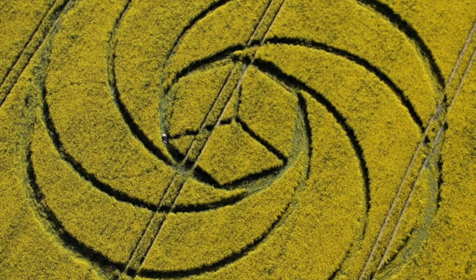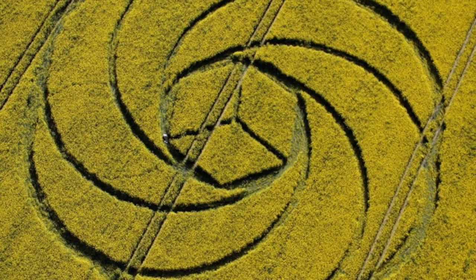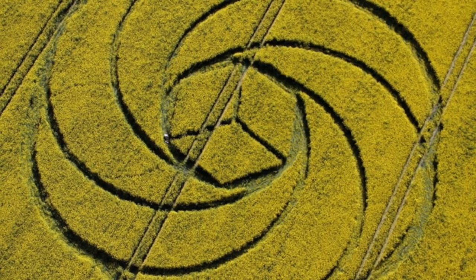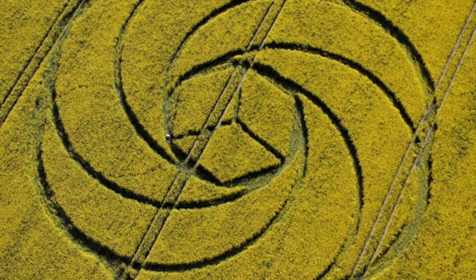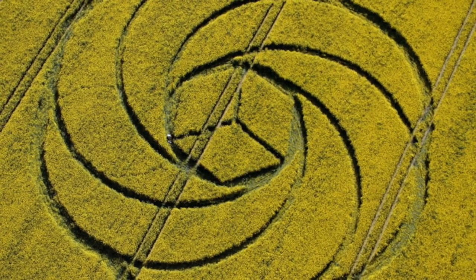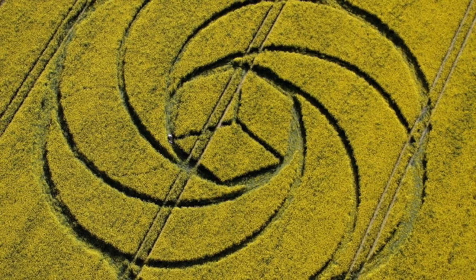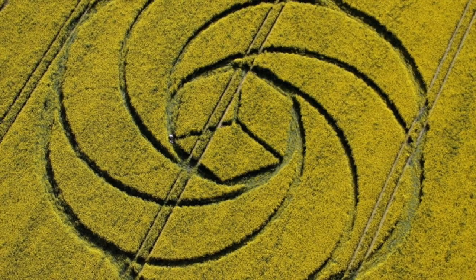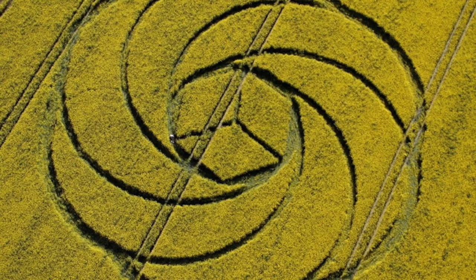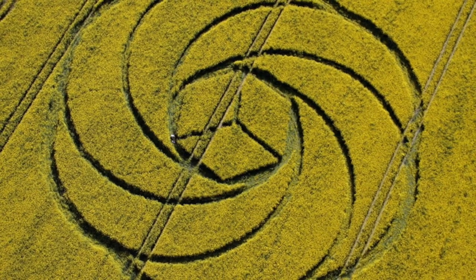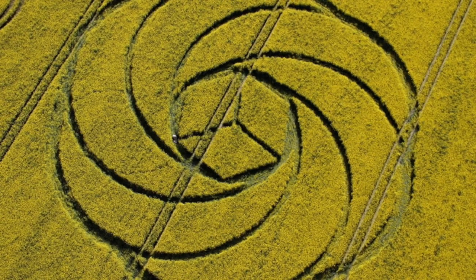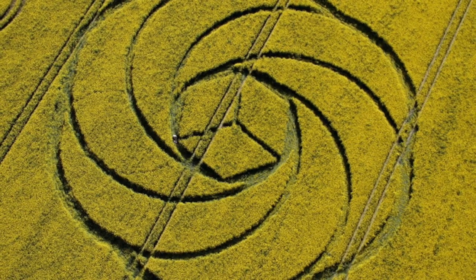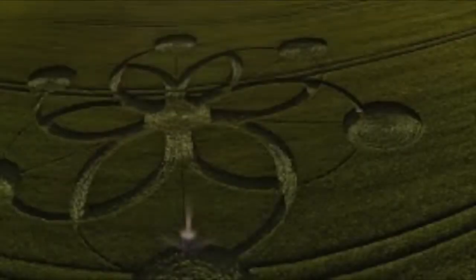So, in my opinion, these images, these crop circles, they are most likely coming from the Confederation. They are most likely coming from higher ETs, maybe fourth density, maybe even fifth or sixth density, higher planes of existence.